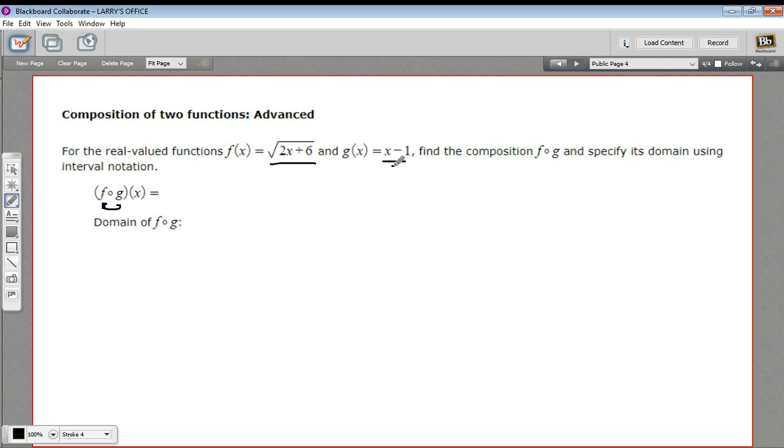So let's take g of x and put that in place of x in f of x. So f of g of x is going to equal the square root of 2 times x minus 1 instead of x, plus 6.